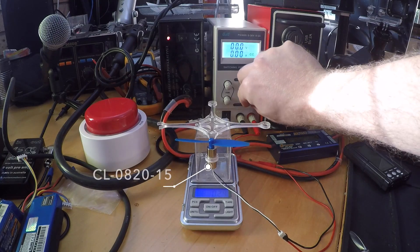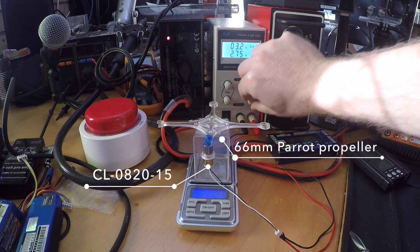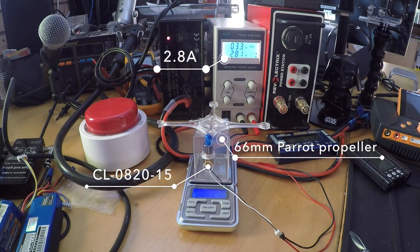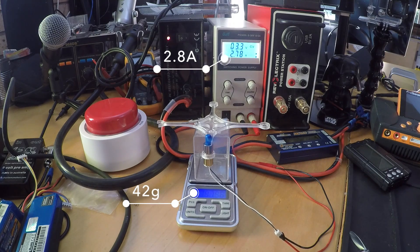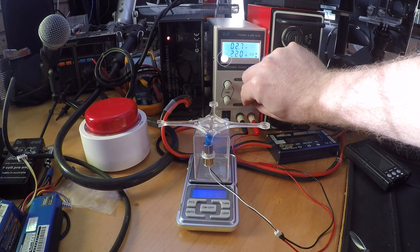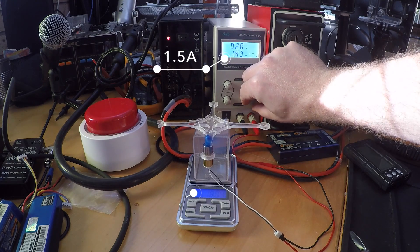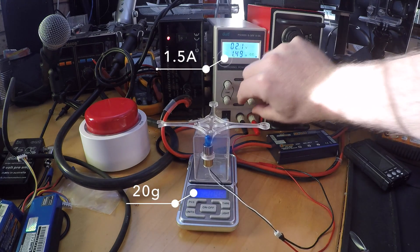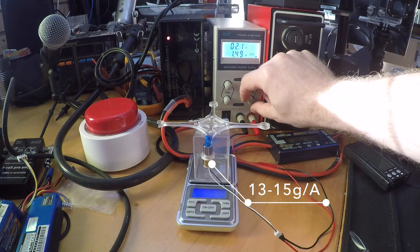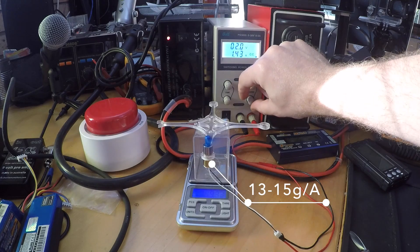The same motor with a 66 millimeter prop pulls 2.8 amps and produces 42 grams of thrust. When I limit the current to 1.5 amps, the thrust goes down to 20 grams. That makes 13 to 15 grams of thrust per amp.